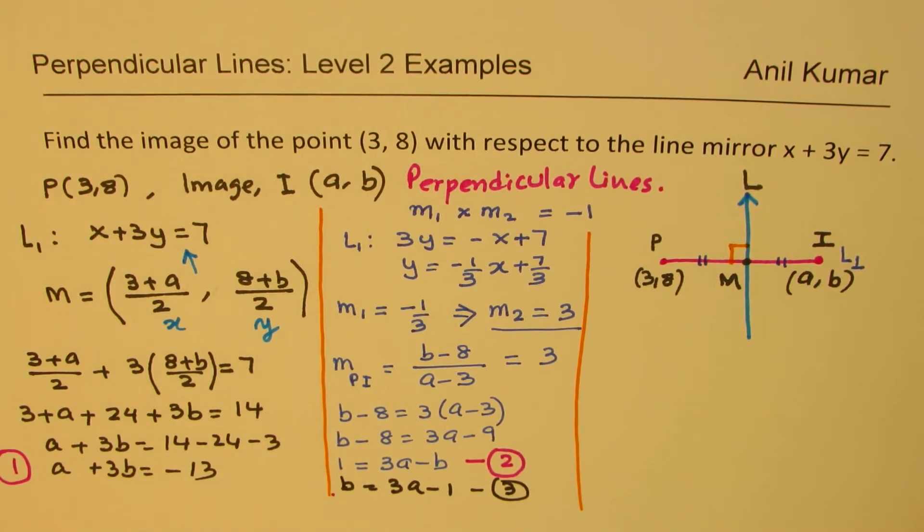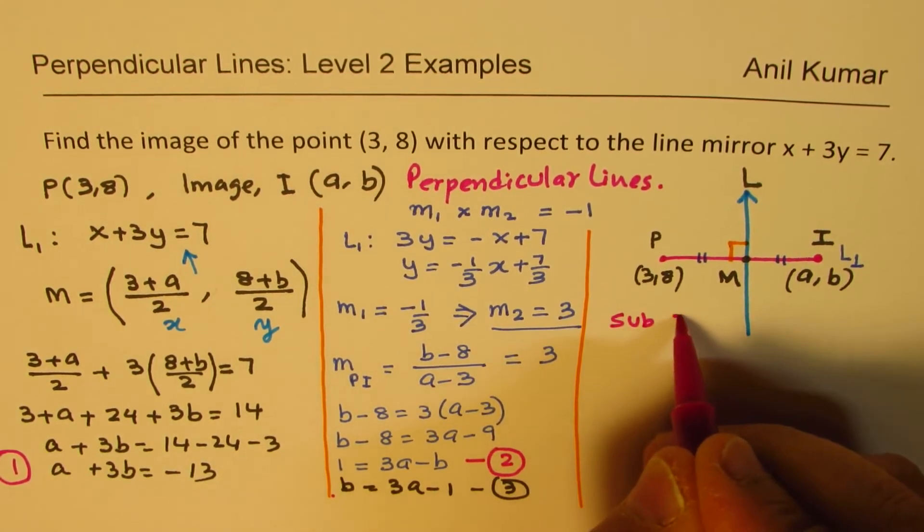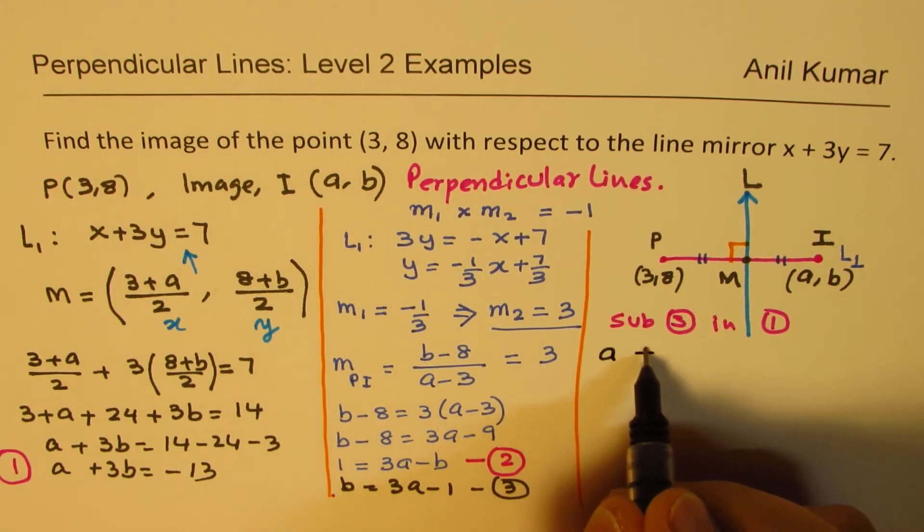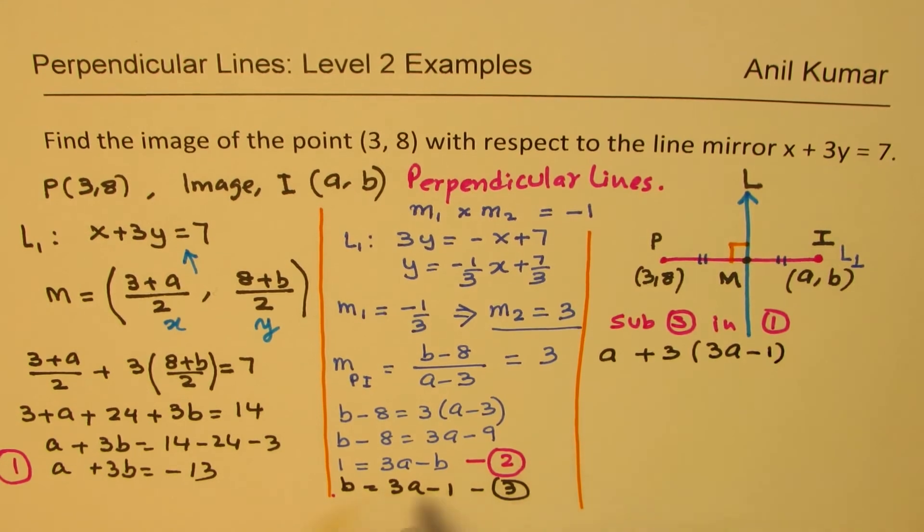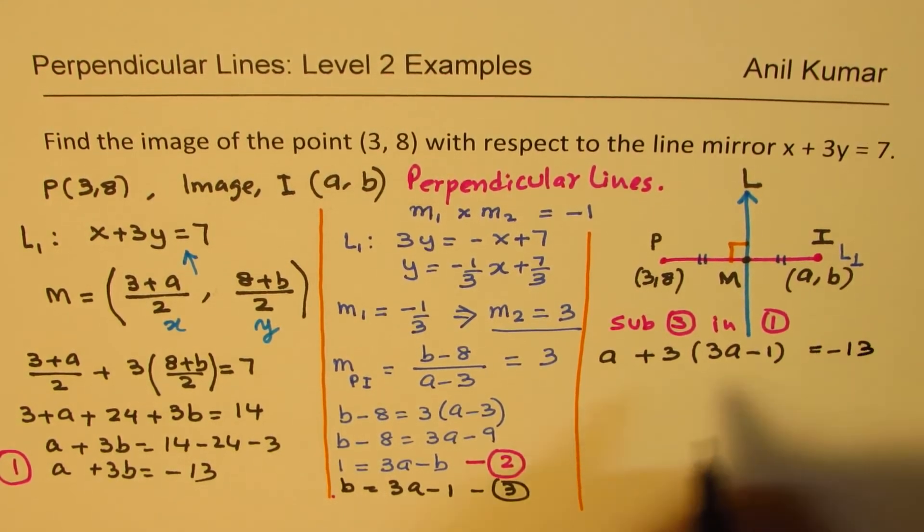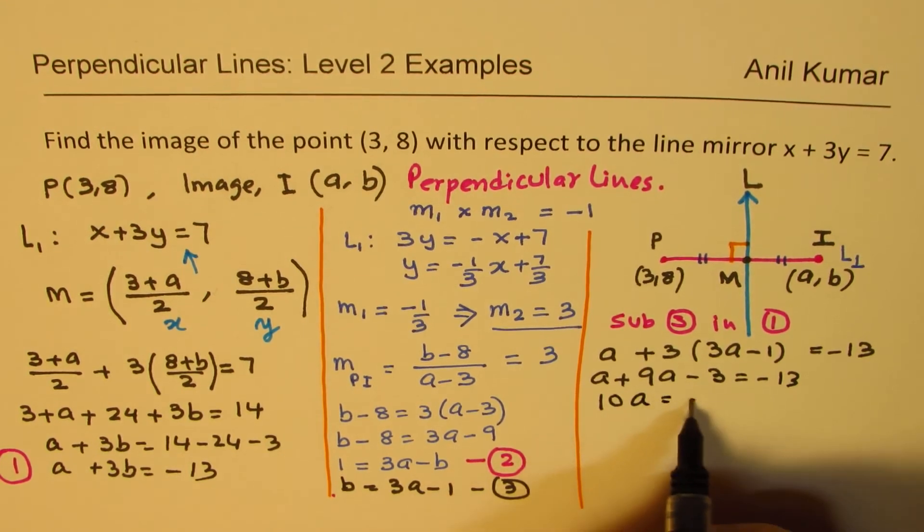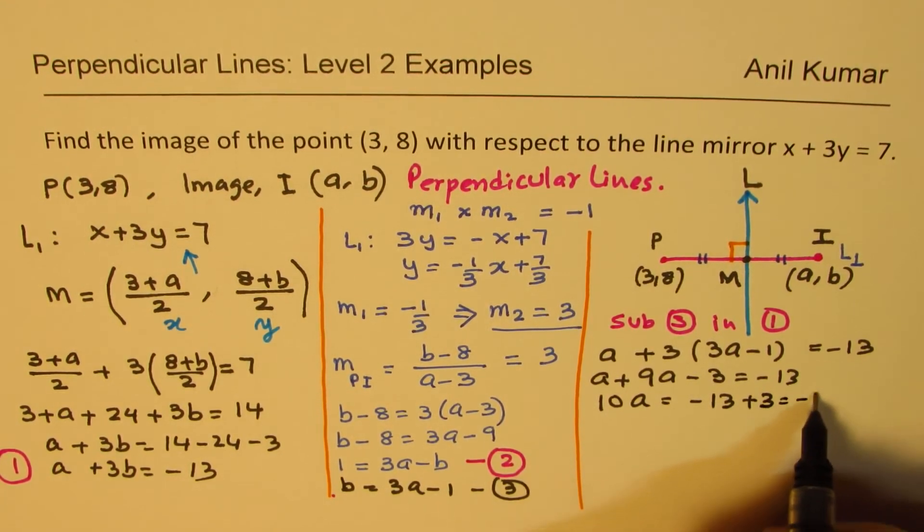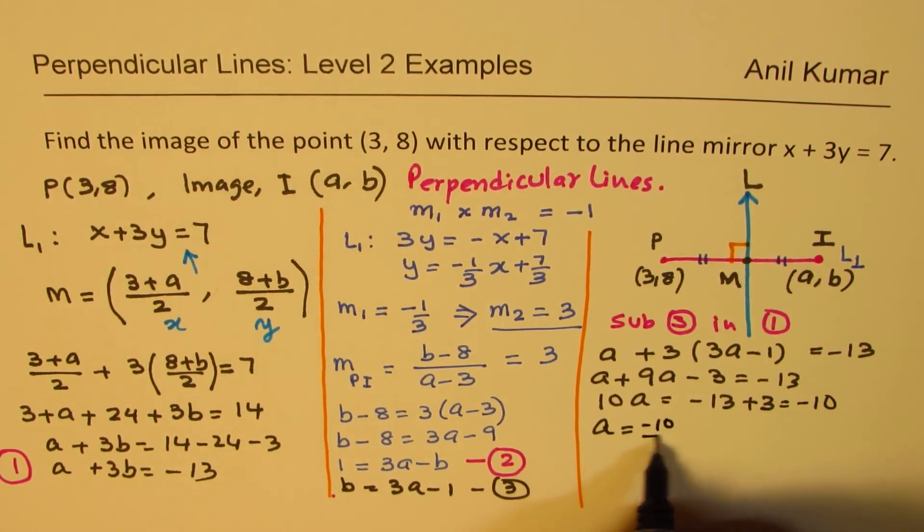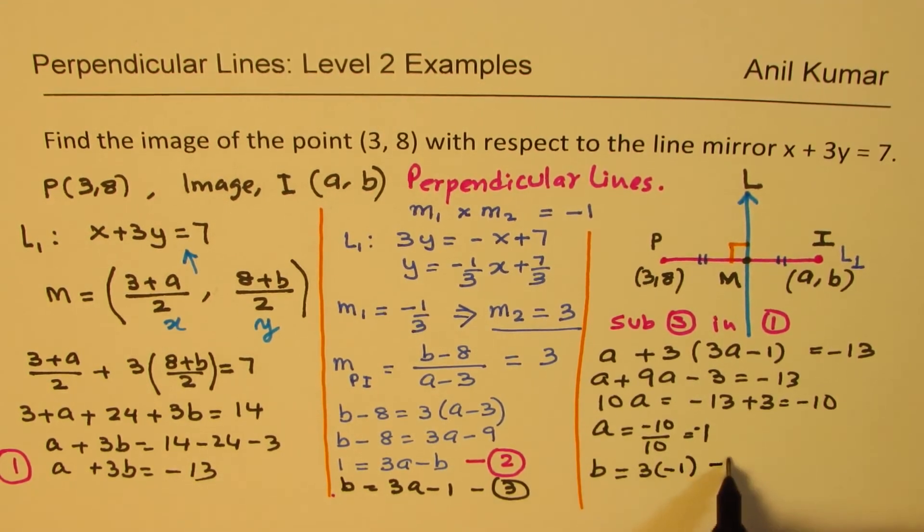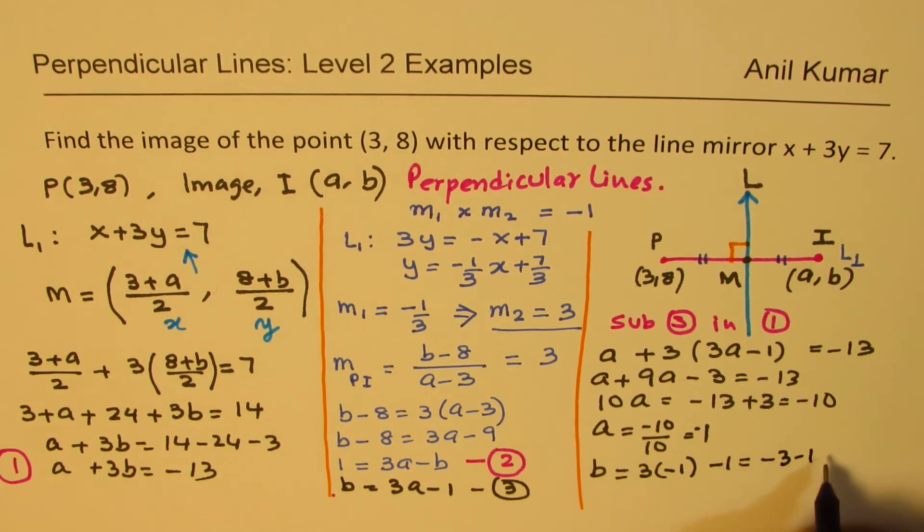Now we'll substitute equation 3 in equation 1. So that means the value of b, 3a - 1 here. So we get a + 3 times (3a - 1) equals to -13. Open the bracket, a + 9a - 3 equals to -13. So 10a equals to -13 + 3, which is -10. So a equals to -10/10, which is -1. So if a is -1, then what is b? b equals to 3 times -1 minus 1, so this gives you -3 - 1 or -4.